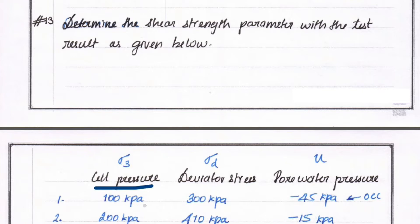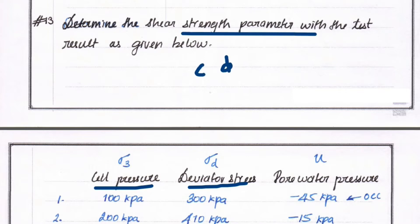For Test 1: sigma 3, that is cell pressure, equals 100 kPa; deviator stress equals 300 kPa; and pore water pressure equals minus 45 kPa. For Test 2: cell pressure equals 200 kPa; deviator stress equals 410 kPa; and pore water pressure equals minus 15 kPa.